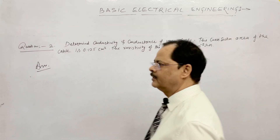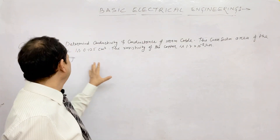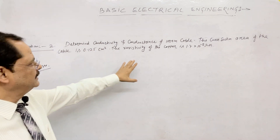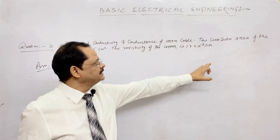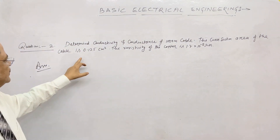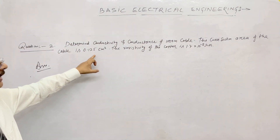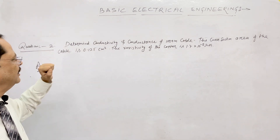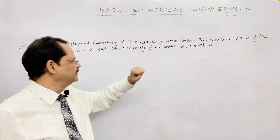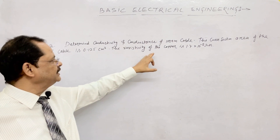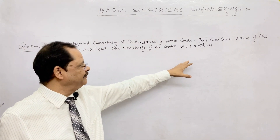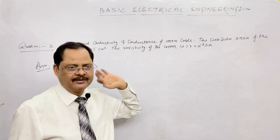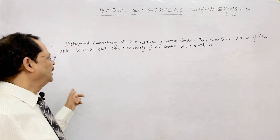Now the second question: determine the conductivity and conductance of a 1000-meter cable. The cross-section area of the cable is 0.125 cm² and the resistivity of copper is 1.7 × 10⁻⁸ ohm-meter.